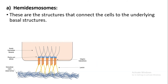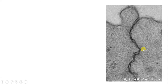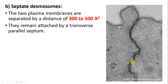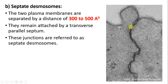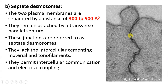There are types of desmosomes. Hemidesmosomes are half of a desmosome and connect the cell to the underlying basal structures. They are morphologically similar to desmosomes but represent only half the structure; they were described by Kelly. The septate desmosome has a distance of 300 to 500 angstroms between cell plasma membranes and cells remain attached by a transverse parallel septum. Septate desmosomes lack intercellular cementing material and tonofilaments, but permit intercellular communication and electric coupling.